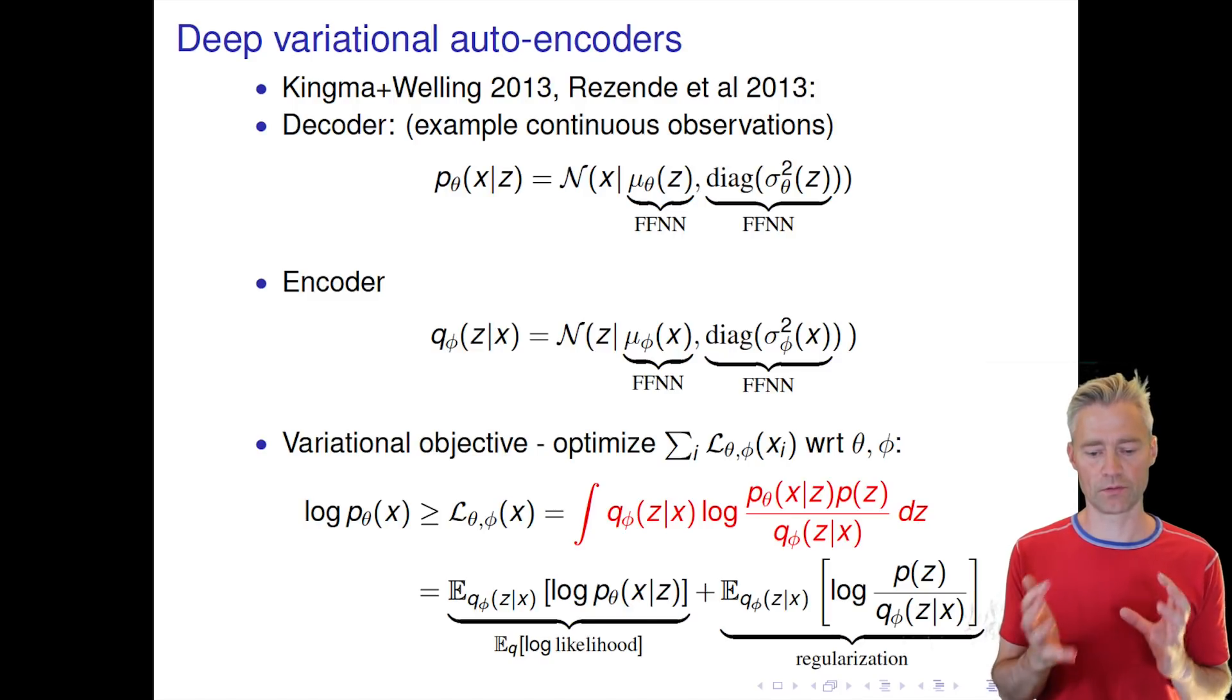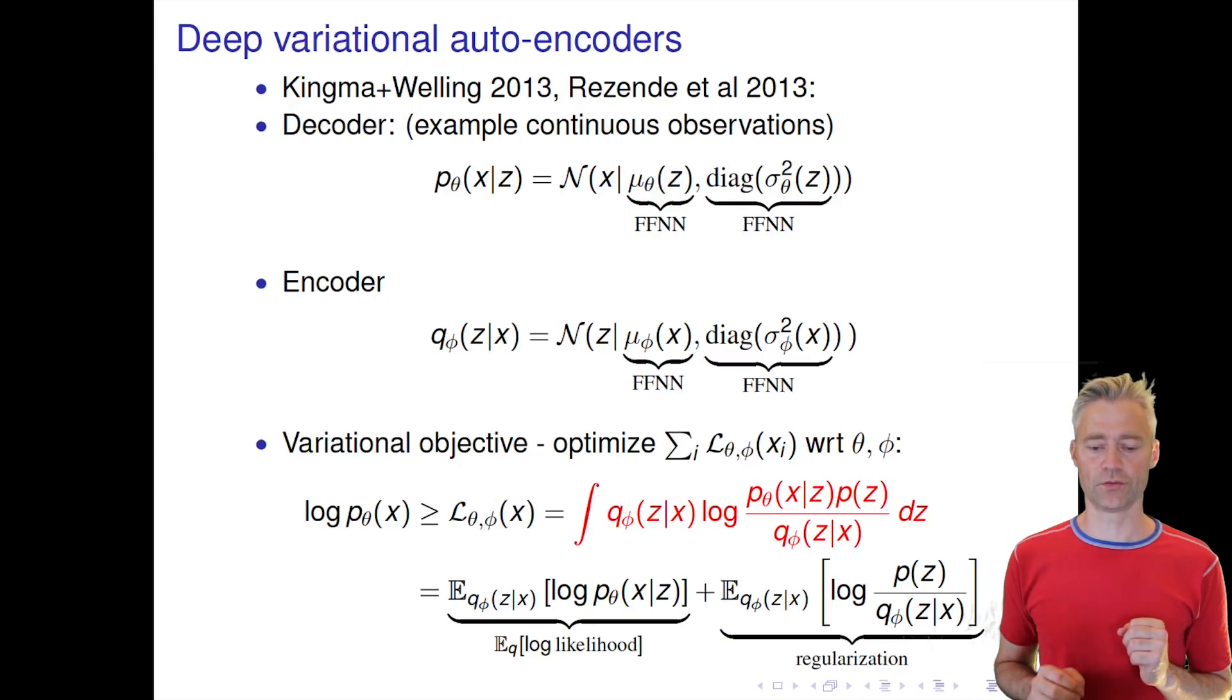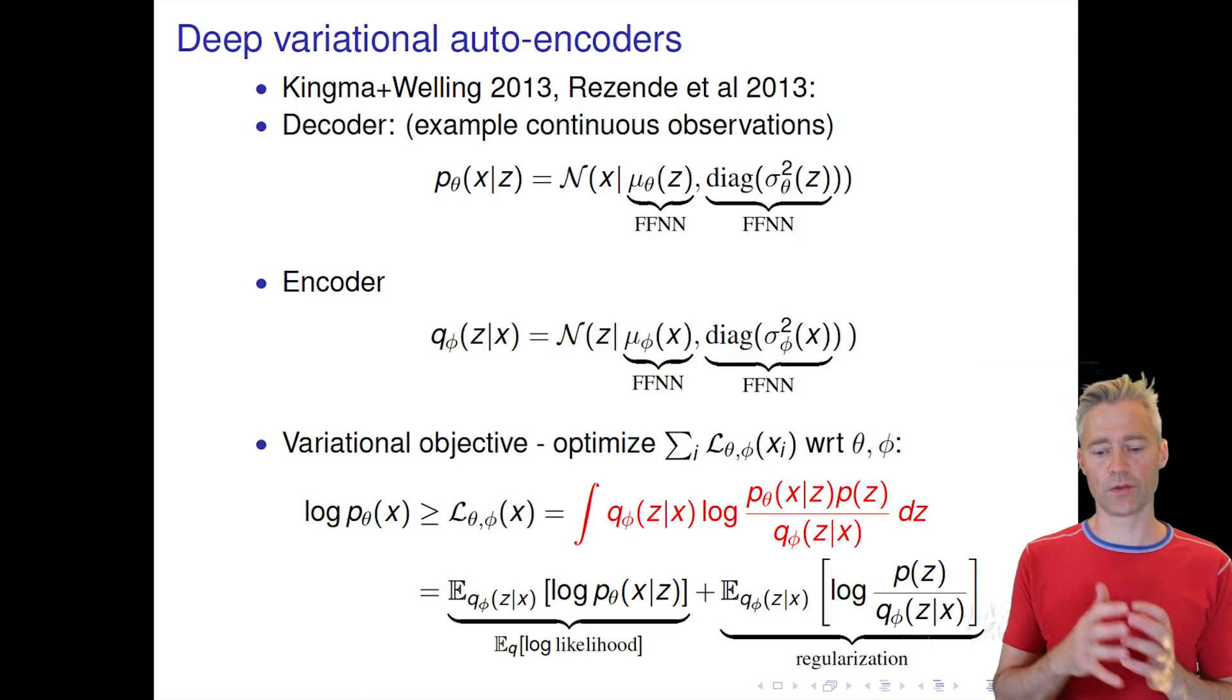That essentially measures how well on average we can reproduce the observations. So if we do a good fit to the data, this first term will be large.